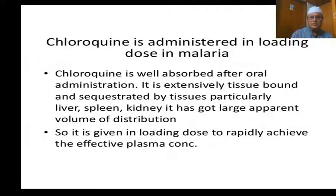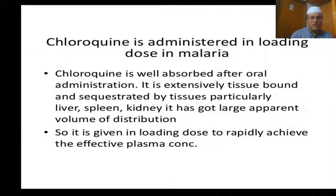Chloroquine is administered in a loading dose in malaria. Chloroquine is well absorbed on oral administration but is extremely tissue-bound and sequestrated by tissues — particularly liver, spleen, kidney, and lungs. It has a large apparent volume of distribution. Because of the large volume of distribution, it is given in a loading dose to rapidly achieve effective plasma concentration.